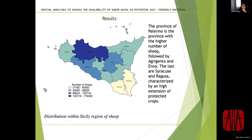Preliminary results show that the province with the highest quantity of sheep is Palermo, the second is Agrigento. These provinces also have the highest concentration of sheep and are suitable for breeders given the morphology of the territory. A distribution map was produced showing the location of sheep wool within the Sicily region as a potentially eco-friendly material resource.